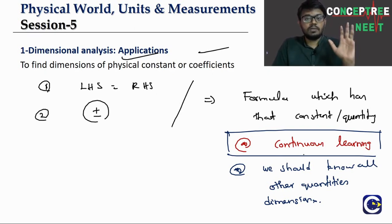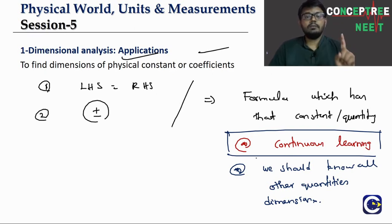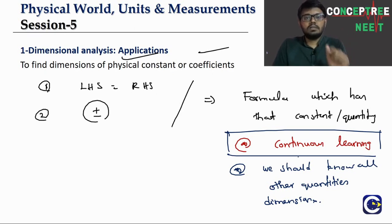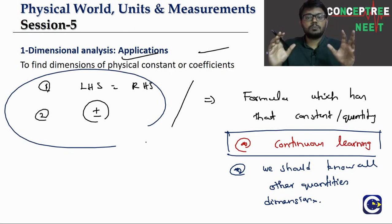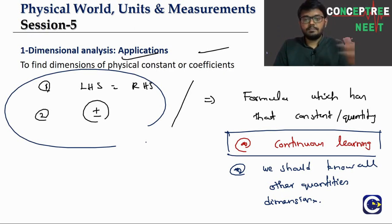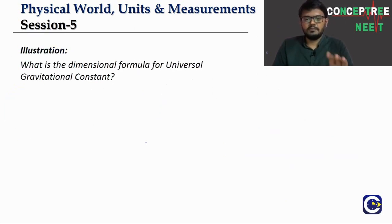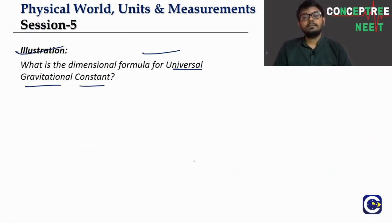The approach is: we need one formula, and other than the unknown quantity or constant, we should know the dimensions of everything else. Using the two principles of dimensional analysis, we can find the dimensions. Let us look at examples. First question: what is the dimensional formula of the universal gravitational constant?